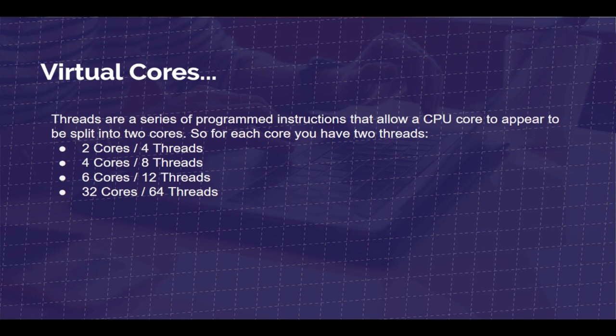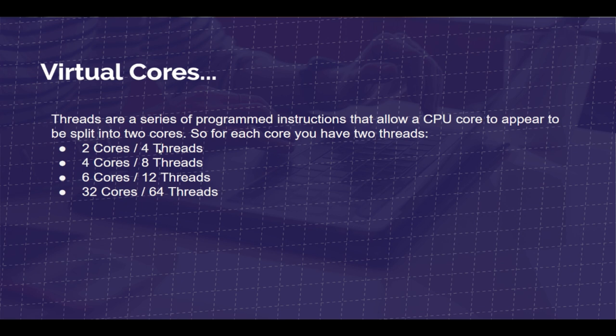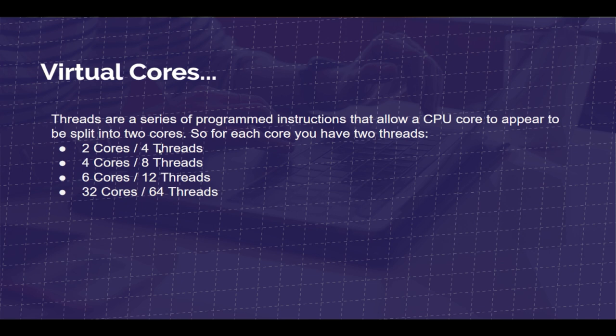So what are threads? Threads are basically virtual cores — a series of program instructions that allow a CPU core to appear to be split into two cores. For each core you have two threads: two cores, four threads; four cores, eight threads; six cores, 12 threads; and now we have all the way up to 32 cores and 64 threads.